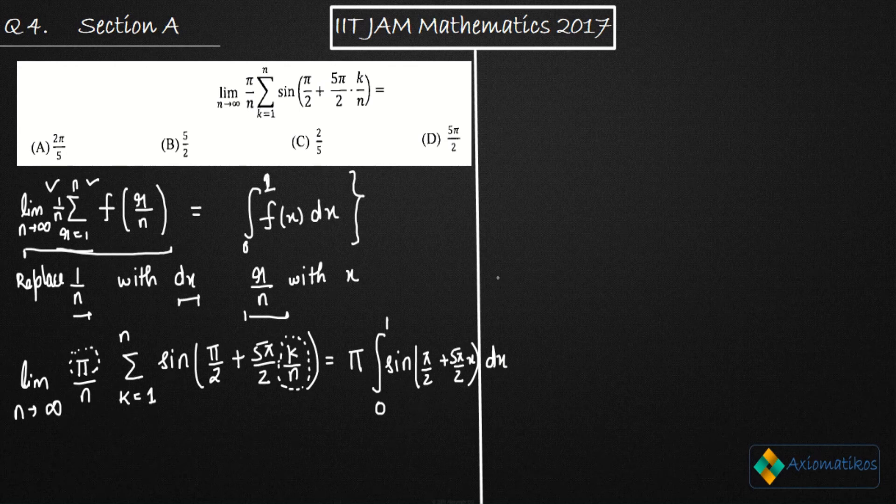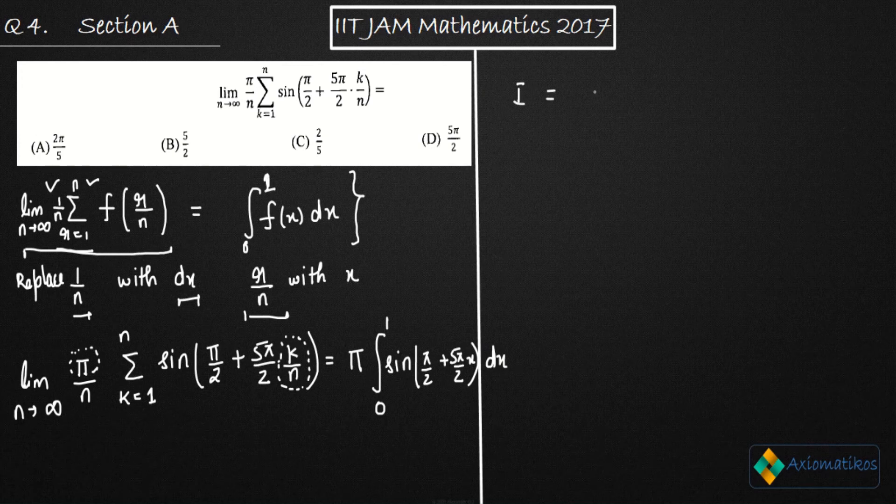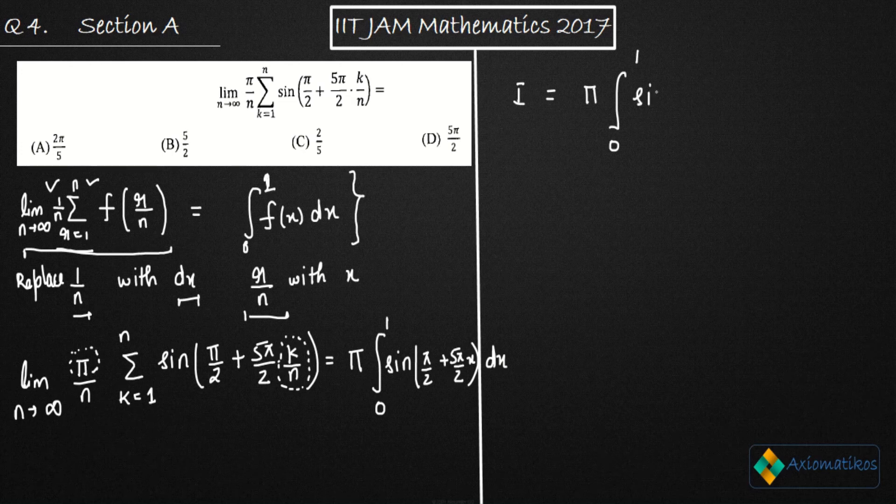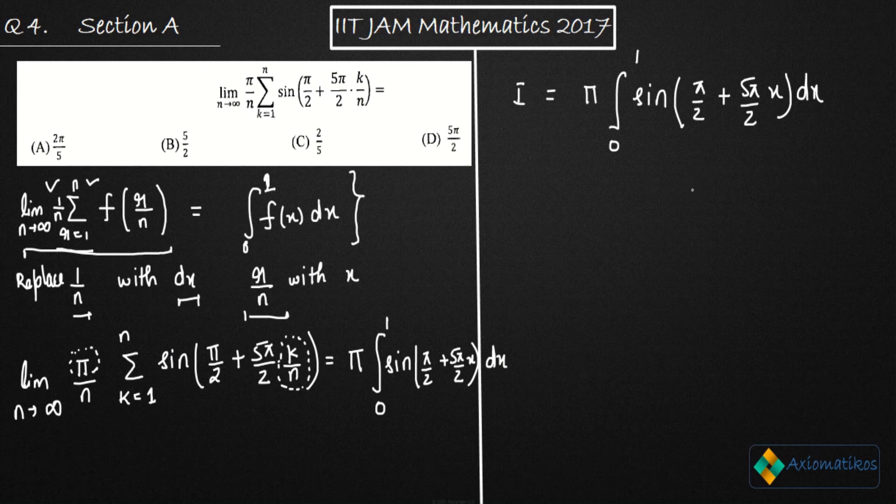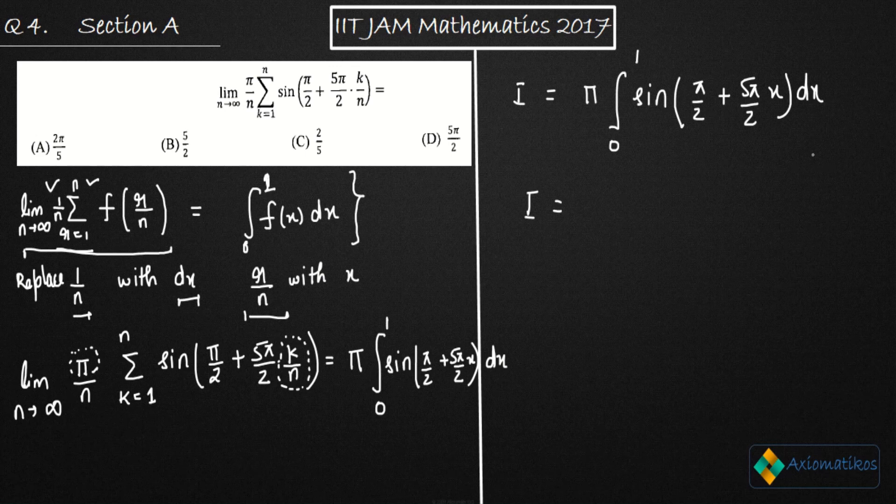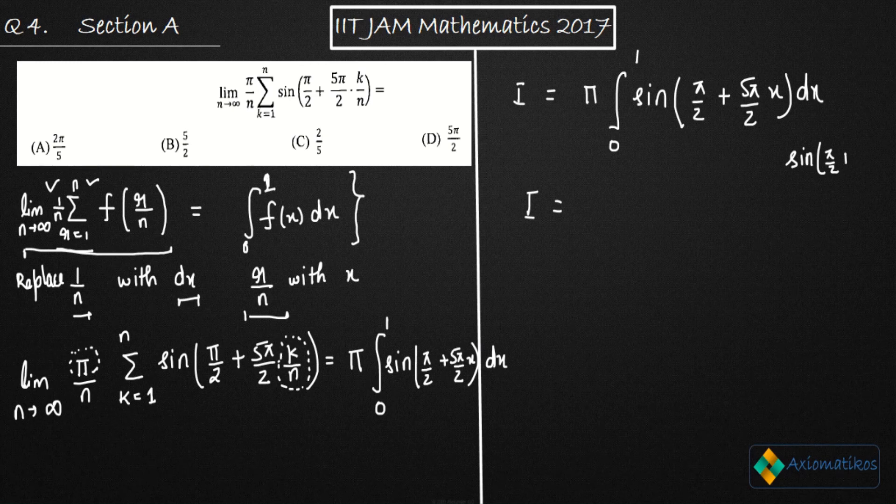So finally, I got this. So I need to just integrate this. So the limit, the value of the limit will be equal to integral of 0 to 1 sine pi by 2 plus 5 pi by 2 X dx. Now this is very easy to integrate. You can use an identity. So what is that identity? Sine pi by 2 plus theta. What is sine pi by 2 plus theta? It is cos theta.